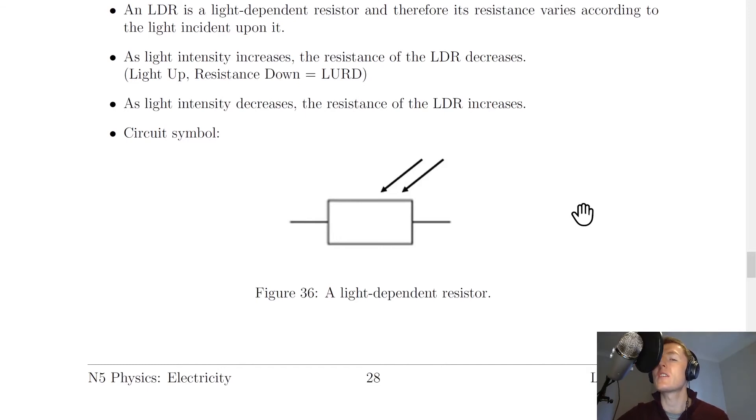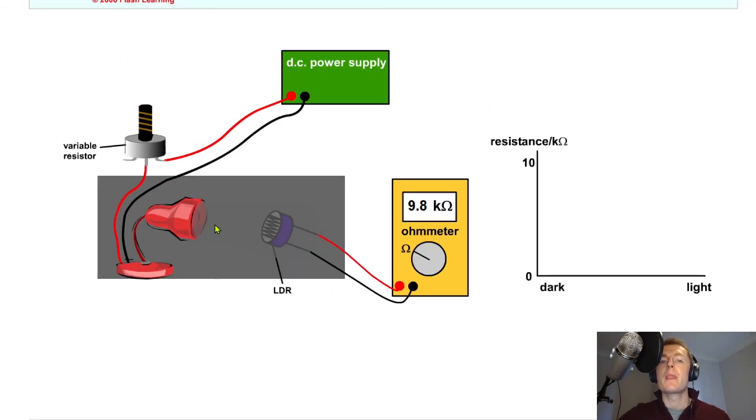So just to show you a quick simulation of an LDR in use, let's say we have a DC power supply connected to a variable resistor and a lamp, and we then have an LDR connected to an ohmmeter. And let's say we start with the lamp off, so we're in a pitch black room, then we've got a set resistance on the ohmmeter.